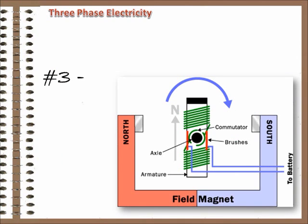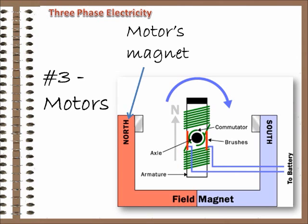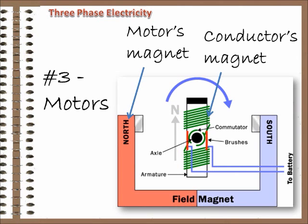Number three. Motors work because of the interaction between opposing magnetic fields. There's a magnet in the motor and a magnetic field around the conductor bringing power to the motor. The attraction and repulsion between those fields is what makes the motor turn.